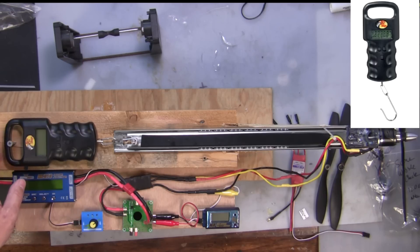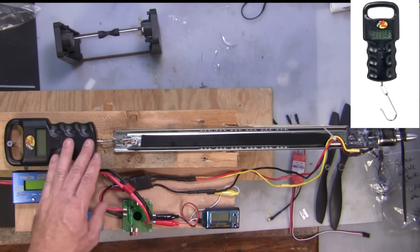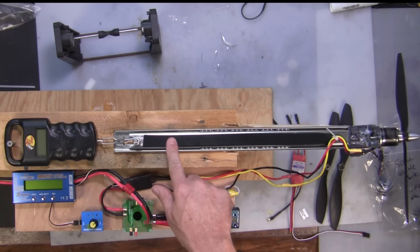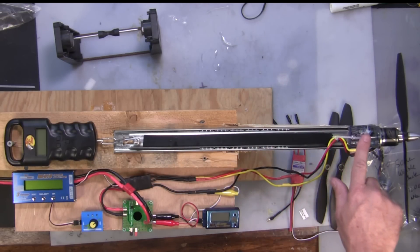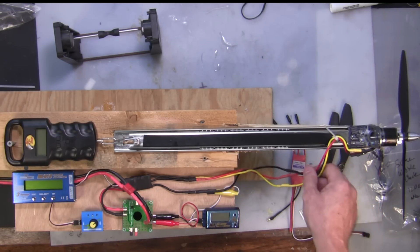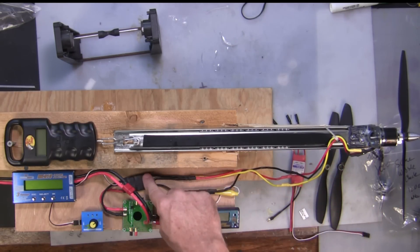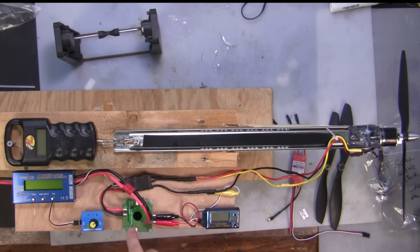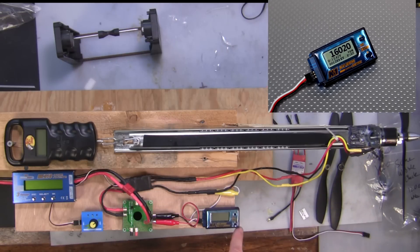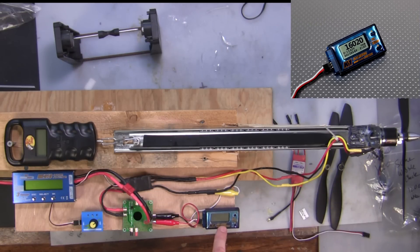First of all, I have a scale set up here that measures the amount of grams of thrust that's being pushed along this rail right here. Now I've got the motor stand that's attached at the end with a motor and propeller combination. And I have the brushless power wires going back here to the speed control that's connected to a power distribution that powers two things. It powers my KV1 meter that's going to tell me the measured KV of the motor and the RPMs.